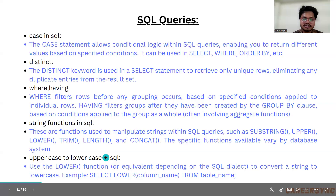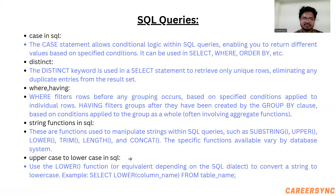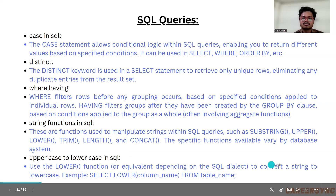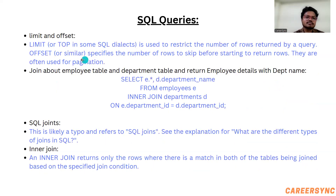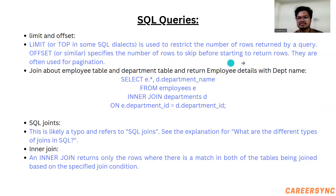Converting uppercase to lowercase is a most important question to prepare before the interview. Use the LOWER function — for example: SELECT LOWER(column_name) FROM table_name. LIMIT is used to restrict the number of rows returned by a query. OFFSET specifies the number of rows to skip before starting to return rows. They are often used together for pagination.